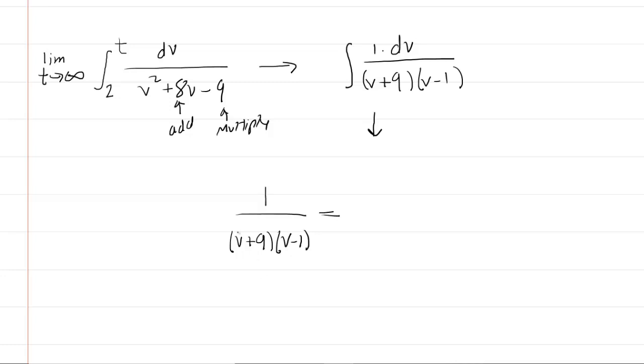Now, these two factors are what we call distinct linear factors. They are distinct because they're different. V plus 9 is different than v minus 1. And they're linear because their variable is raised to the power of 1. So distinct linear factors can be decomposed into a constant over the first factor, plus another constant over the second factor.